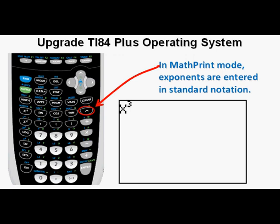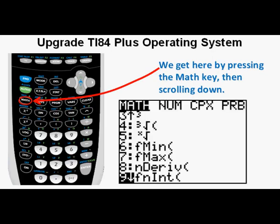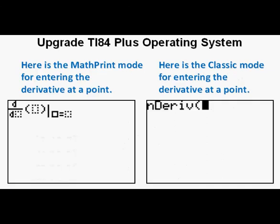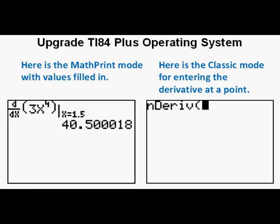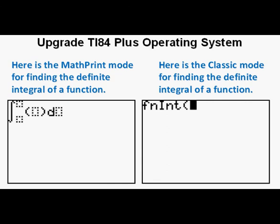In classic mode, entering a derivative at a point is not very understandable unless you are very familiar with the calculator. In MathPrint mode, we access it via the Math key, scroll down, and find Option 8 for derivative at a point and Option 9 for definite integral. The MathPrint mode shows the derivative in familiar notation with values filled in for a polynomial function — much more understandable than classic mode. Similarly, the classic mode for finding a definite integral is difficult to interpret, while the MathPrint version displays it in standard calculus notation.